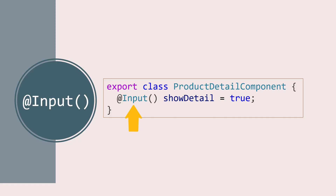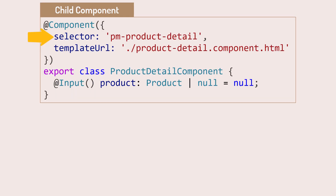We use the input decorator to define an input property. An input property allows us to specify a property in a child component that can receive a value from a parent component. Here we have a child component with a selector of PM product detail. We use the input decorator to define an input property called product.